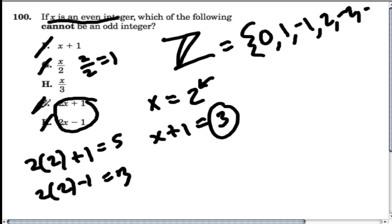By logical positive elimination, H is the only one that has to be true. Let's look at why. If you plug in an even like two or four and then divide it by three, you don't get an integer, you get a decimal.